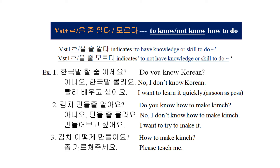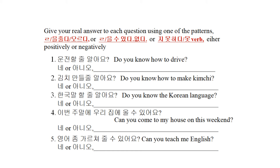Now please do the following exercise on your own. Try to give a real answer to each question using one of the patterns, either positively or negatively. 1. 운전할 줄 알아요? 2. 김치 만들 줄 알아요? 3. 한국말 할 줄 알아요? 4. 이번 주말에 우리 집에 올 수 있어요? 5. 영어 좀 가르쳐 줄 수 있어요?